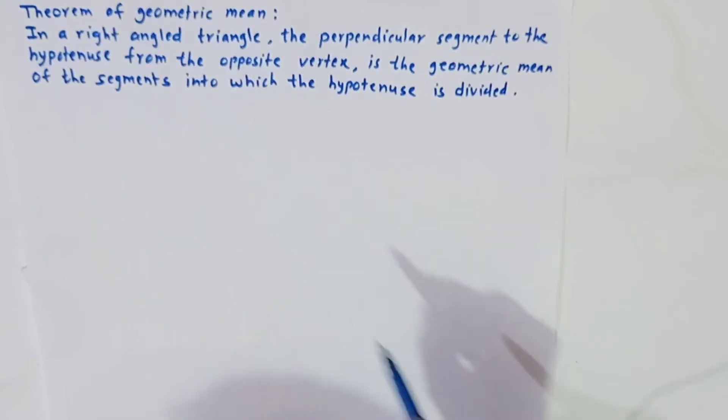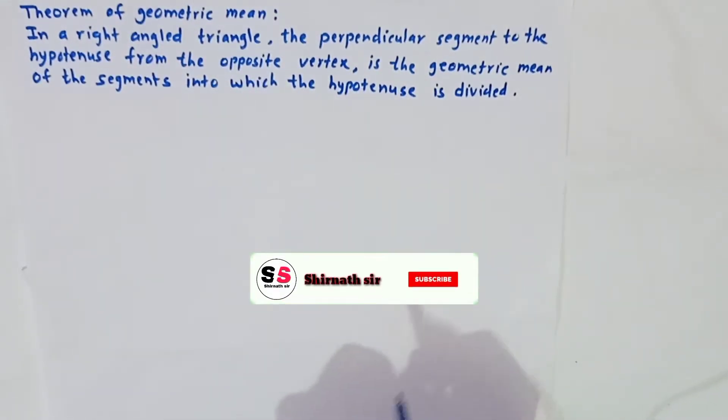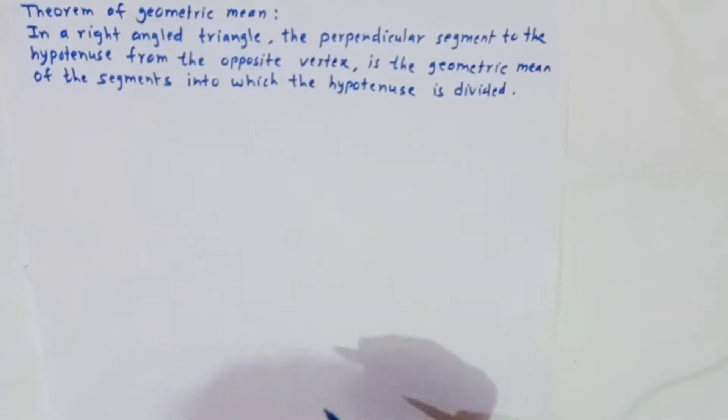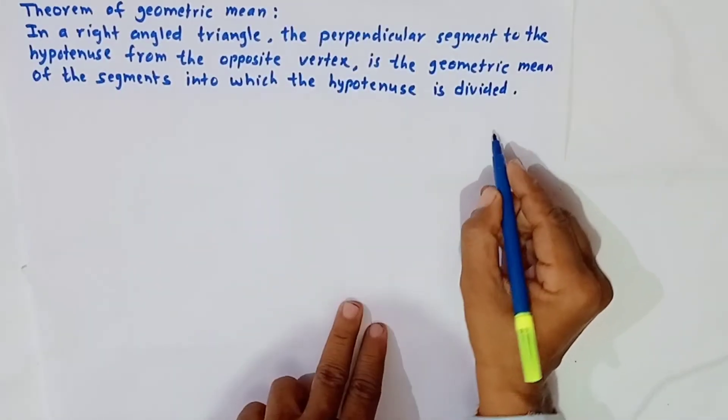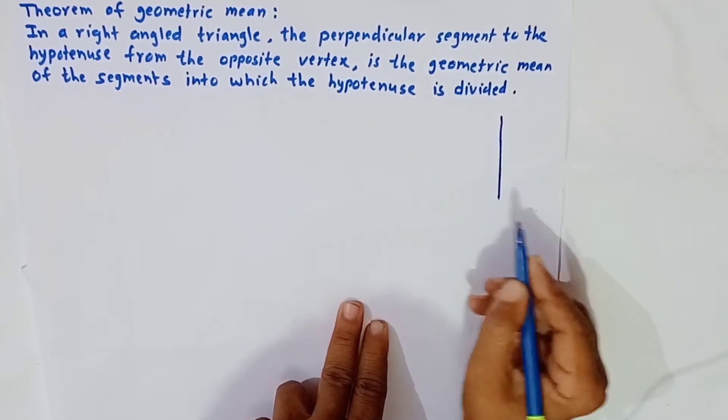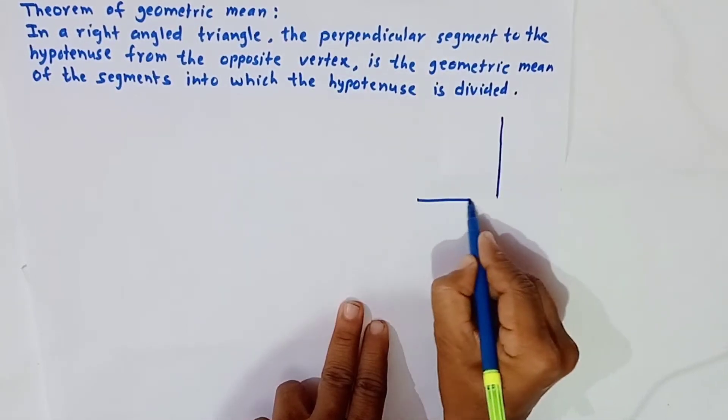This is a right angle triangle. The perpendicular segment to the hypotenuse - first we make a right angle triangle. This right angle triangle we have made.